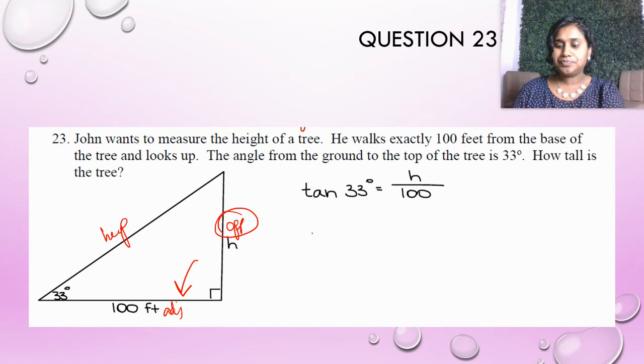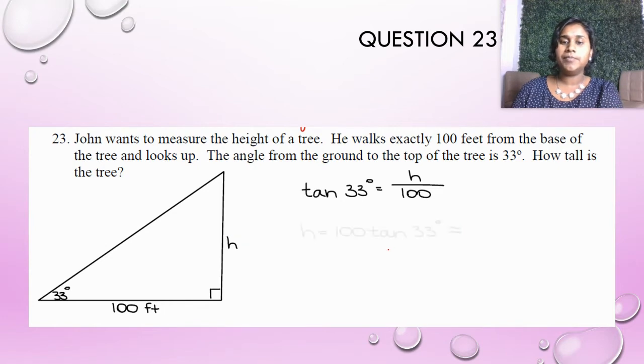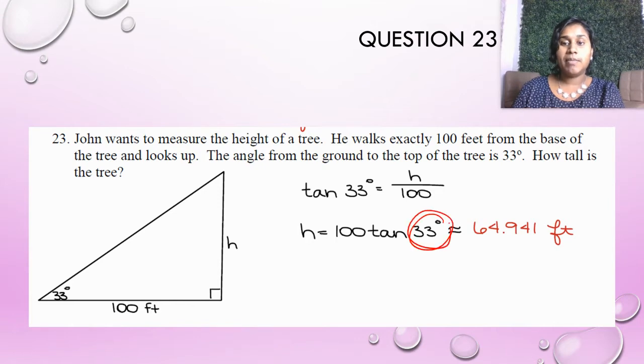If I multiply by 100, I end up with 100 tan of 33 degrees equals H. Throw that into a calculator and you end up with the value of 64.941 feet. Make sure that your calculator is functioning in degrees. If it's functioning in radians, you have to do some conversions or you got to figure it out. All right.